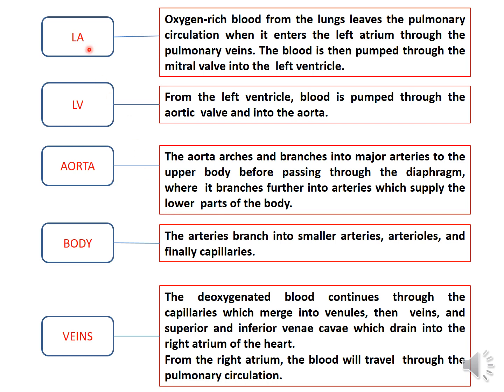Once again, the left atrium receives blood from the pulmonary vein and pushes it into the left ventricle. From the left ventricle, blood is pumped into the aorta. The aorta branches into different arteries to supply the upper and lower parts of the body. In the body, gas exchange takes place: oxygen is released into the tissues and carbon dioxide is picked up. All the capillaries unite together to form veins, which carry deoxygenated blood back to the right side of the heart. That completes systemic circulation.